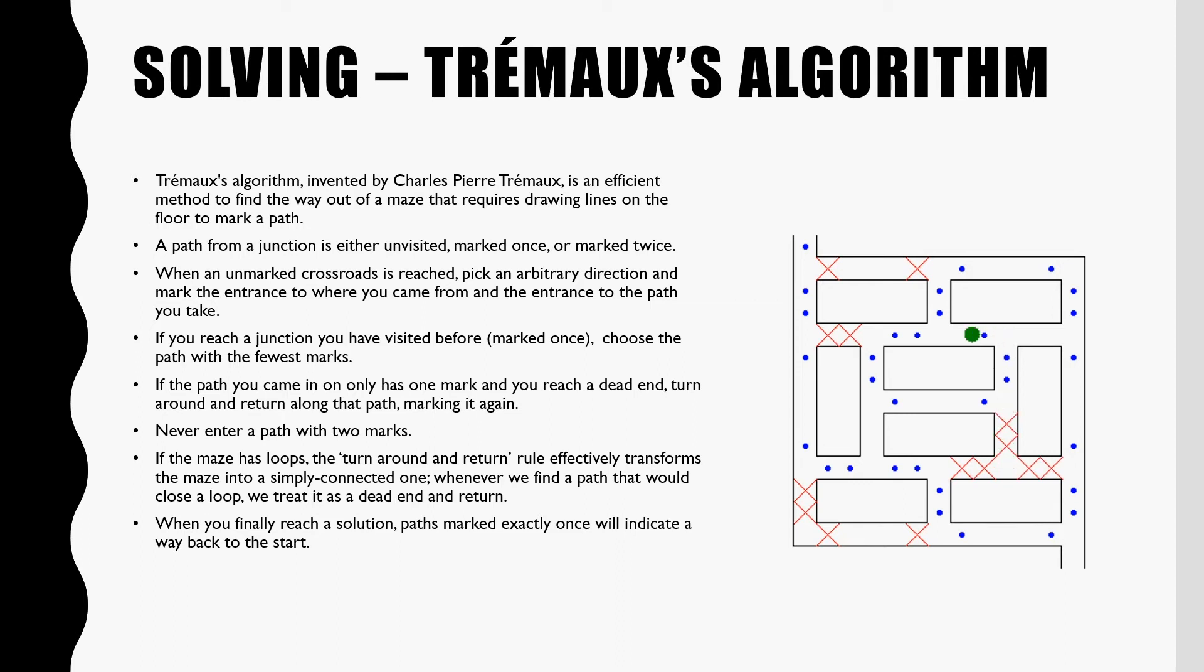Never enter a path with two marks as this means that the path was determined to be a dead end. If the maze has loops, the turnaround and return rule effectively transforms the maze into a simply connected one. Whenever we find a path that would close a loop, we treat it as a dead end and return.